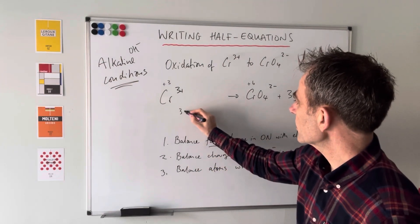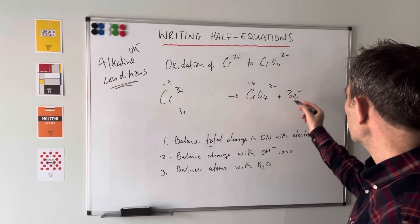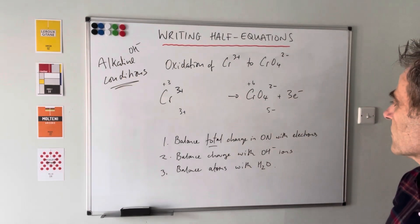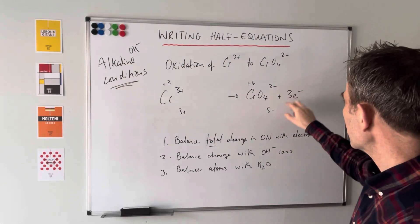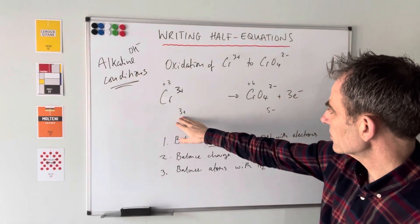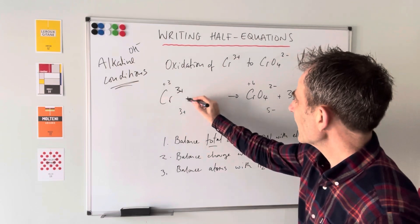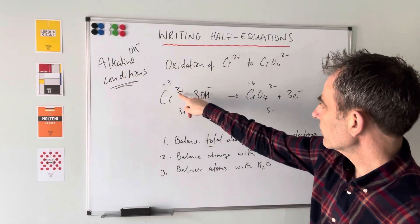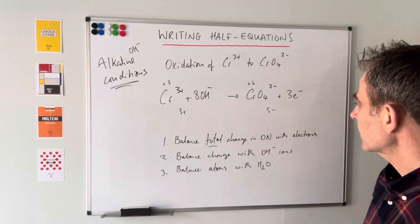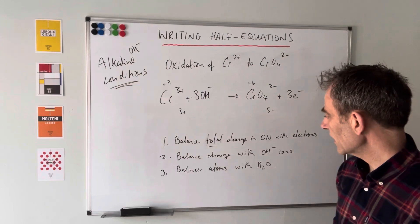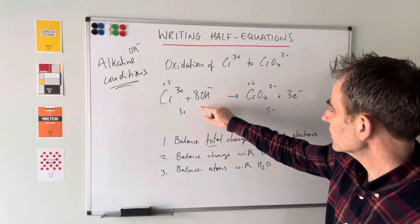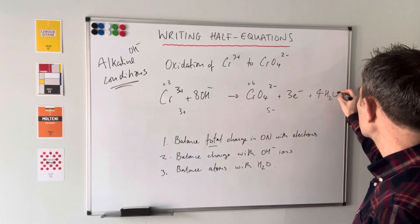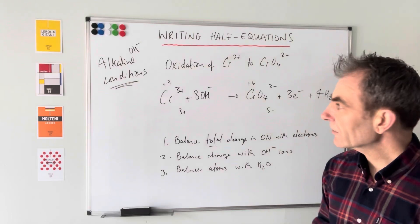Step two: balance the charge with hydroxide ions. We've got three plus on the left; five minus on the right (two minus and three minus). The hydroxide ions need to go on the left - adding to the right would make it more negative, not get us to three plus. We need eight hydroxide ions: three plus plus eight minus gives five minus on the left, matching the right. Step three: balance with water. Eight hydrogens, no H on the right, so four H2O's.